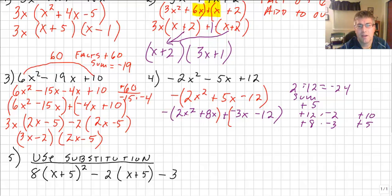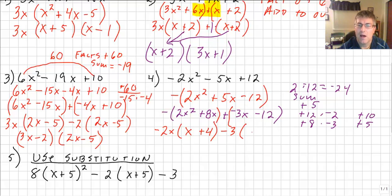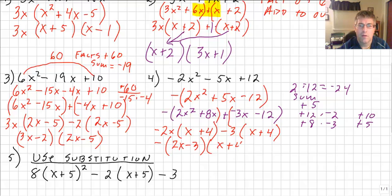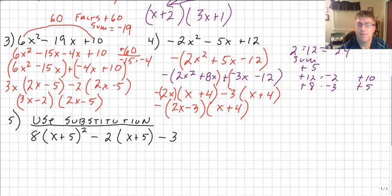Grouping the first pair, I take out 2x, giving me the opposite of 2x times (x + 4). My hope is that I have an (x + 4) when I factor from the second pair — and sure enough, factoring out negative 3 leaves (x + 4). So we have the opposite of (2x − 3)(x + 4). Successfully factored, nice and clean, by factoring by grouping.